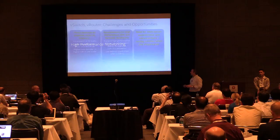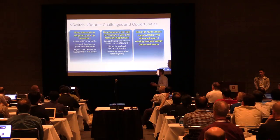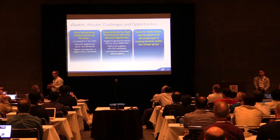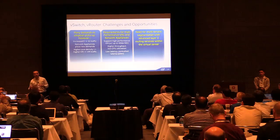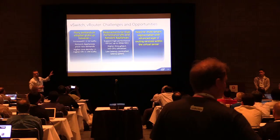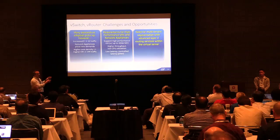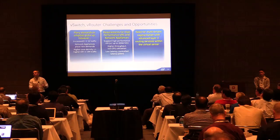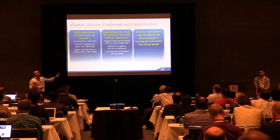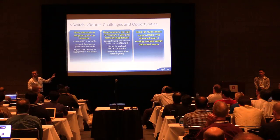Moving to the networking side, the explosion of east-west traffic combined with more cores per platform means that with smarter scheduling algorithms, we can co-locate workloads — because east-west traffic is typically within a data center — saving fabric-related bandwidth. This increases the need for high-performance virtual switching and virtual routing capability, presenting great opportunities and challenges.